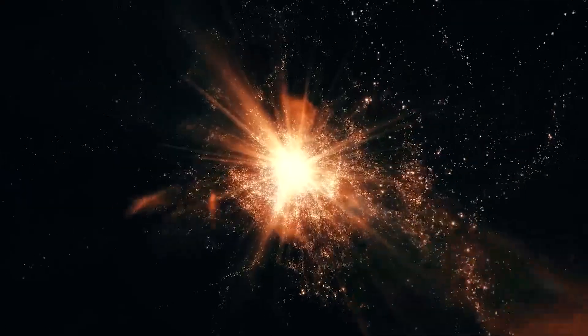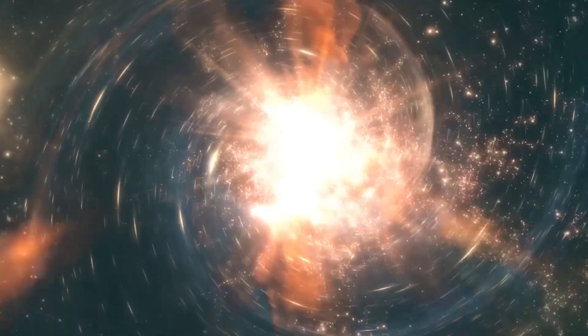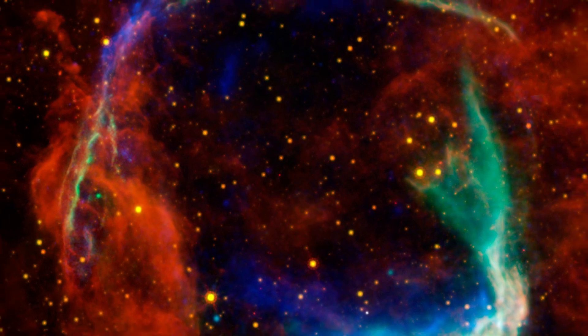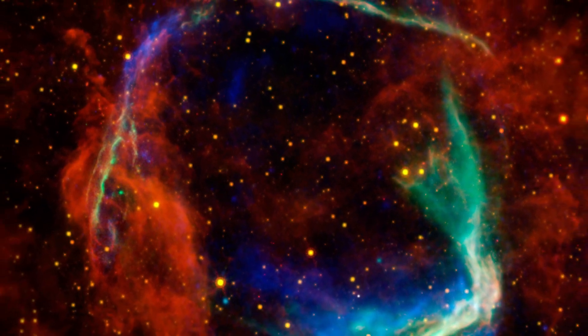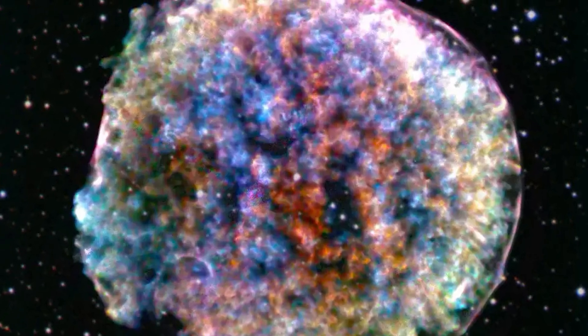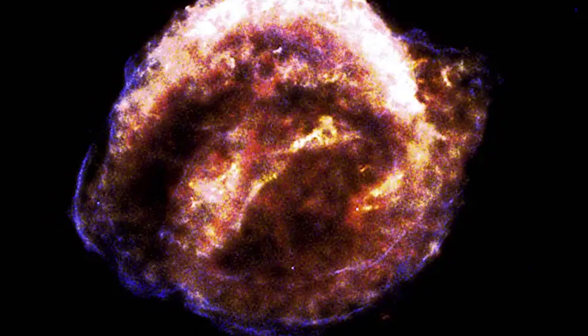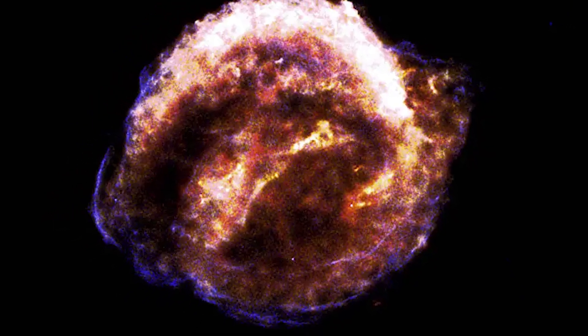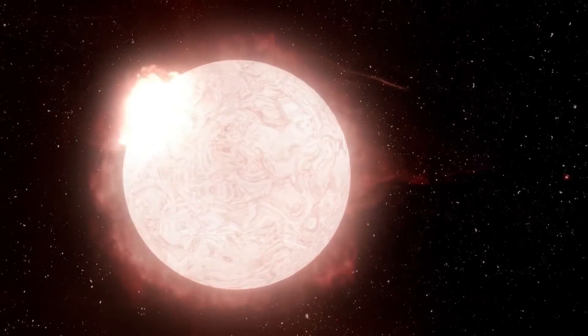Supernovae have been observed throughout history, often misunderstood by early astronomers. The first documented supernova was observed by Chinese astronomers in 185 AD. In 1572, Tycho Brahe recorded a supernova, and in 1604, Johannes Kepler witnessed another, helping to reshape our understanding of the cosmos.